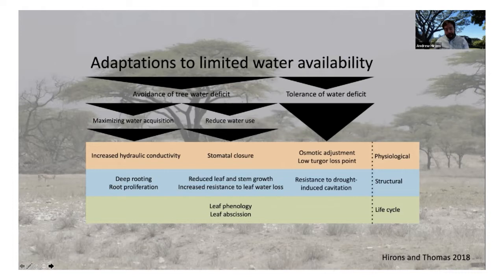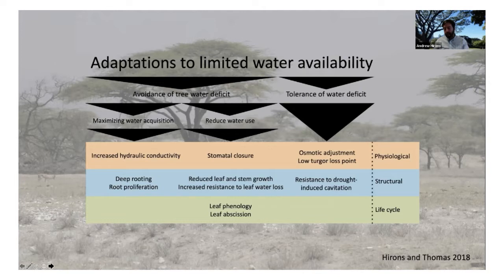The key mechanisms for tolerating water deficit are what we call osmotic adjustment — which depresses the turgor loss point, meaning the tree needs to become drier before it wilts — and quite profound modifications to the wood anatomy and xylem that resist drought-induced cavitation. These mechanisms can be the target of our knowledge and understanding, helping inform which species are going to do really well in drier environments.